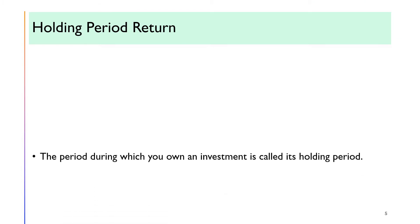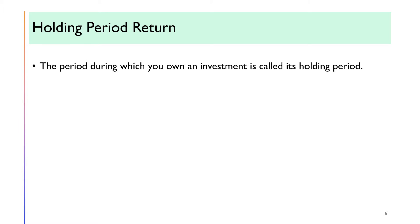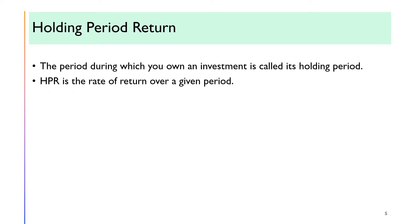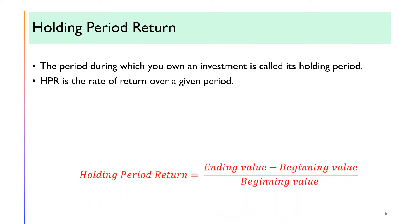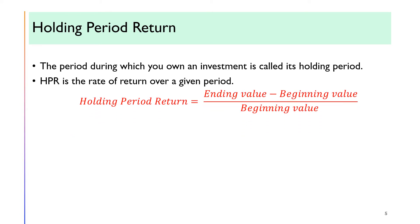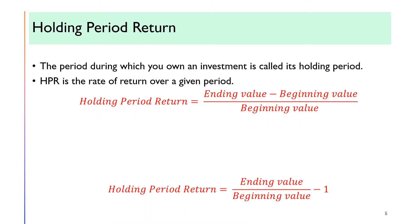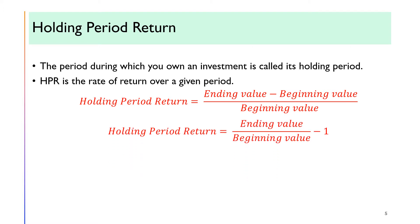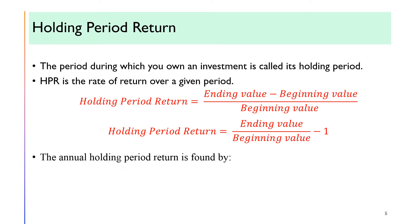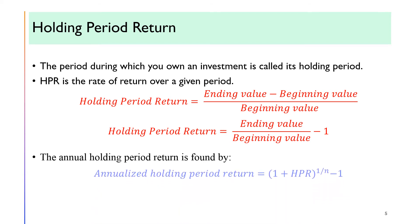The period during which you own an investment is called its holding period. Holding period return is the rate of return over a given period. You may calculate the holding period return with either of the two formulas. I find the second formula faster in calculation. The formula considers the change in value of investment from the beginning to the ending of the period. Holding period can be more than or less than a year. The annual holding period return is found by the following formula, where N represents the number of years the investment is held.